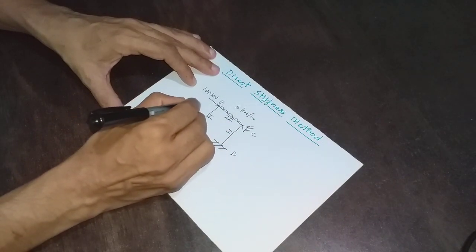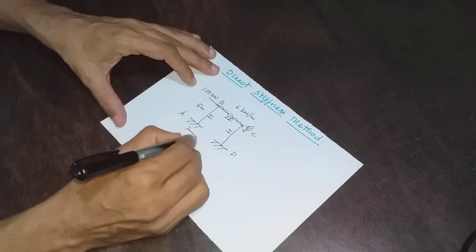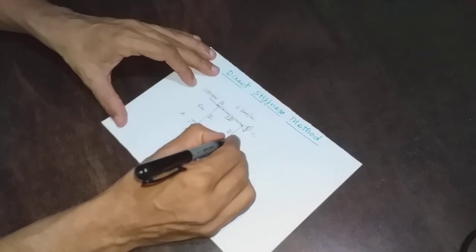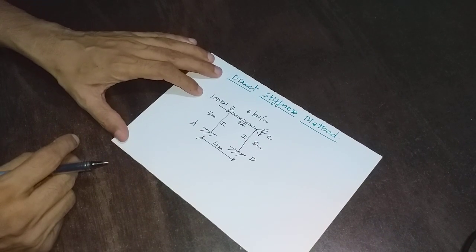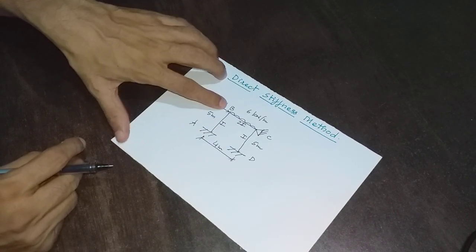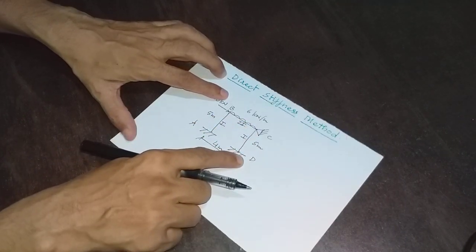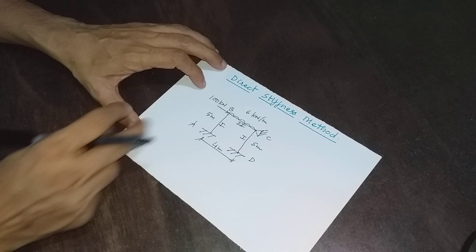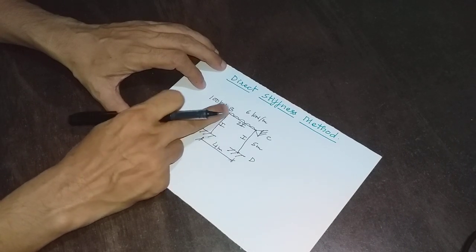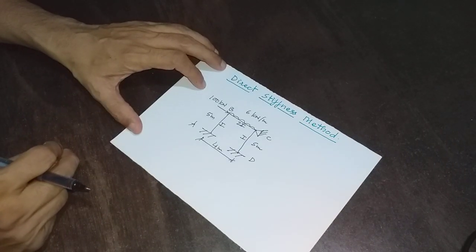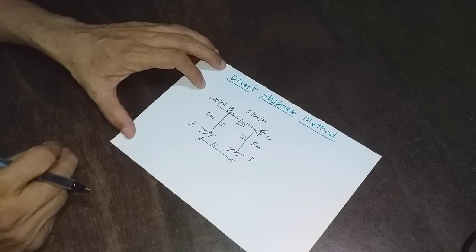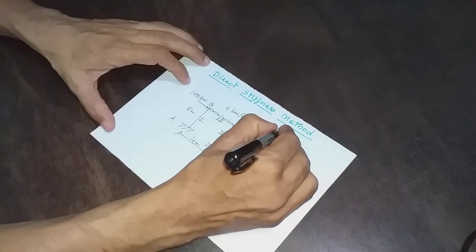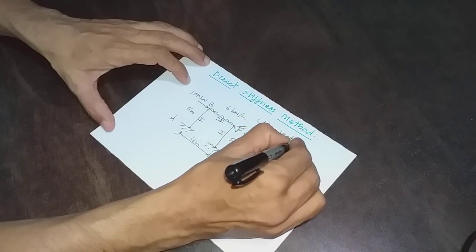The length BC is 4 meters and lengths AB and CD are 5 meters each. The moment of inertia for column AB is I, for column CD is I, and for beam BC is 2I. It is loaded with a 100 kN load at B and 6 kN per meter load on BC. The keyword for this analysis is neglecting axial deformation.